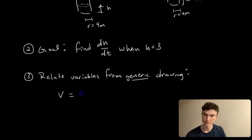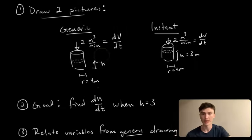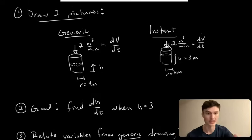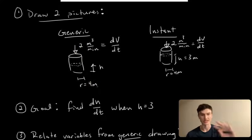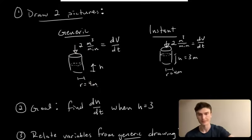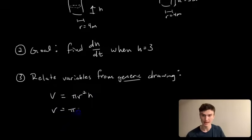Since r is constant at 4 in this problem, we plug that in: V = π(4²)h, which gives us V = 16πh.